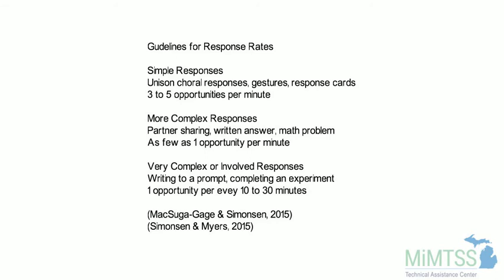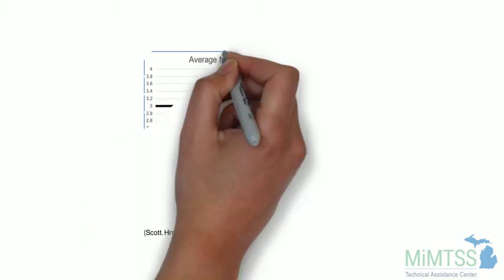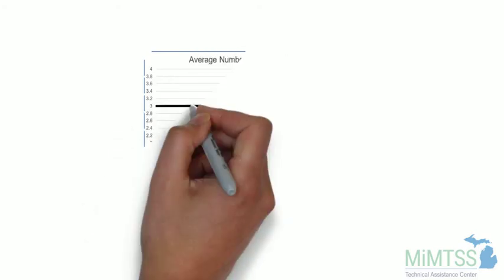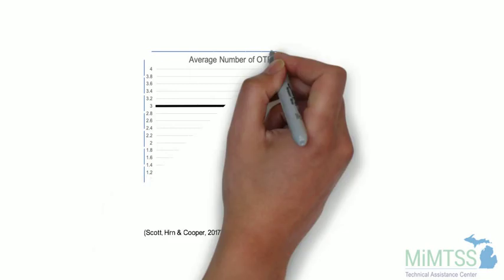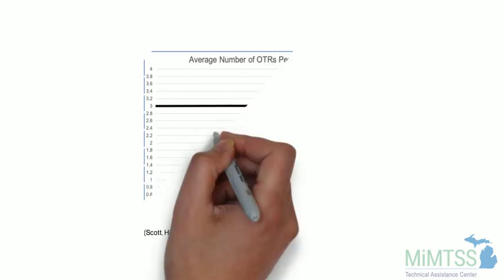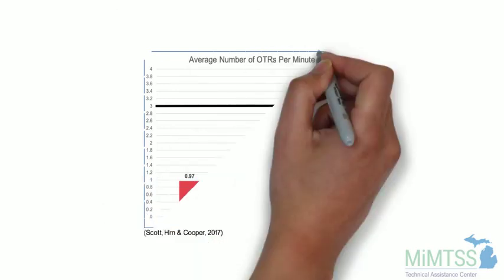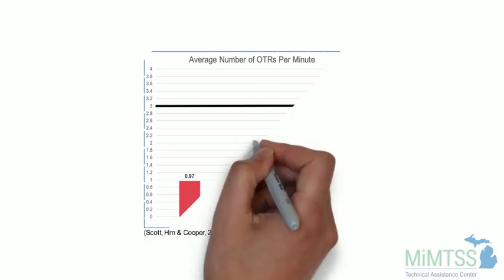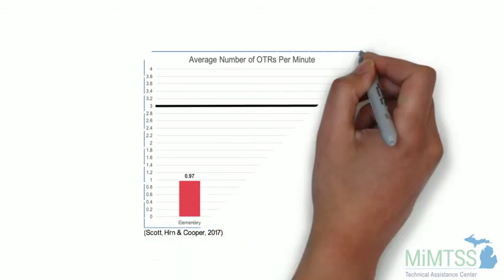This is a rate at which research has demonstrated that students are significantly more likely to be actively engaged. So that makes one think, what is the average rate of OTRs happening in the classroom? In 2017, Scott, Hearn, and Cooper published a summary of 6,752 observations completed in pre-K, elementary, middle, high, middle-high combined, K-8, K-12, and alternative settings. The observations took place across content areas of reading, language arts, mathematics, science, and social studies in schools with a variety of demographic characteristics.